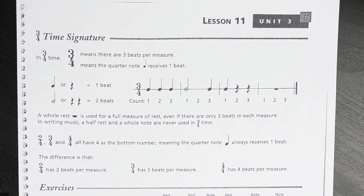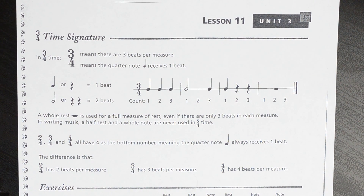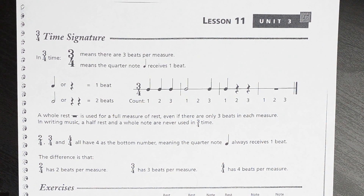Okay guys, Anthony here with another music theory lesson. This is Alfred's Essentials of Music Theory, lesson 11, unit 3 on page 17 out of your Alfred's Essentials of Music Theory book 1. As always, I recommend that you have this book and that you've done the work before you watch the video.